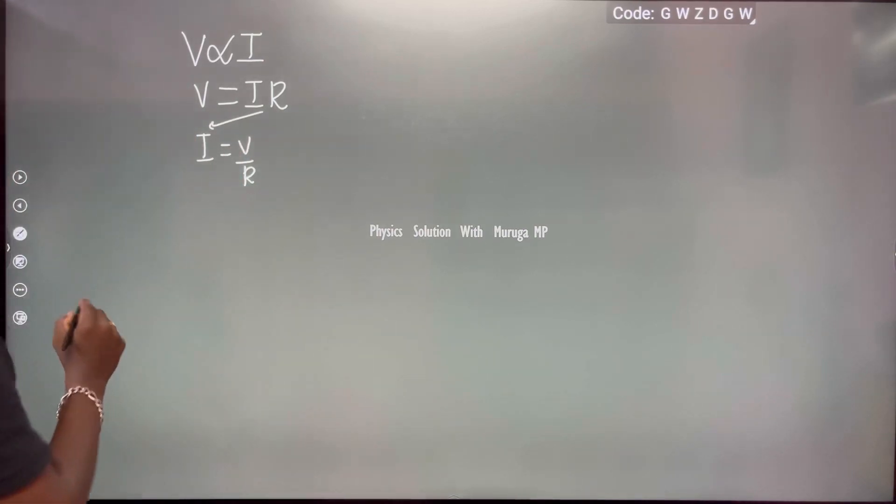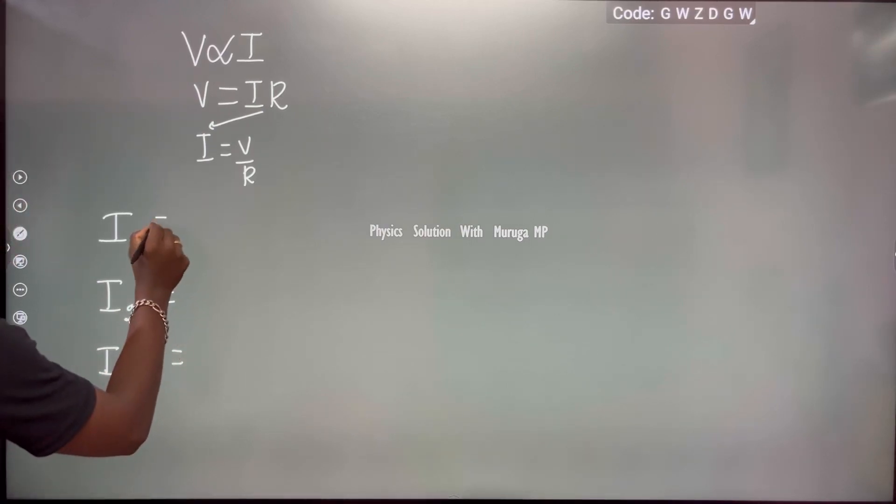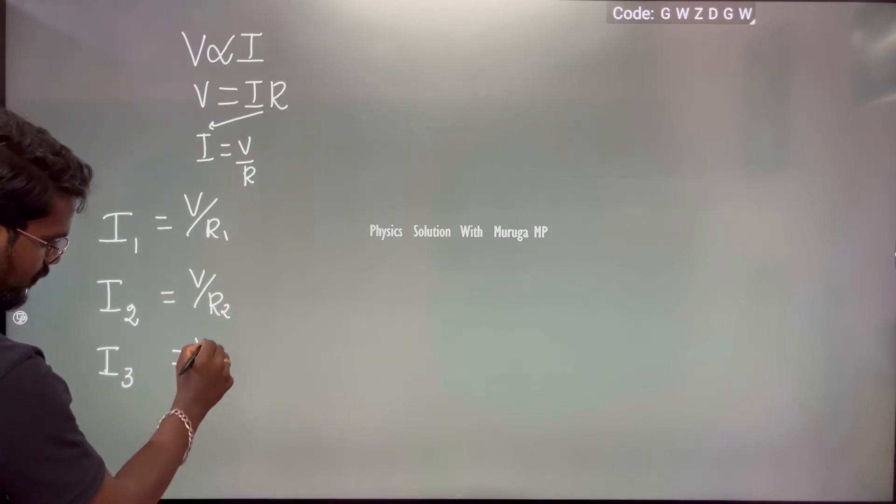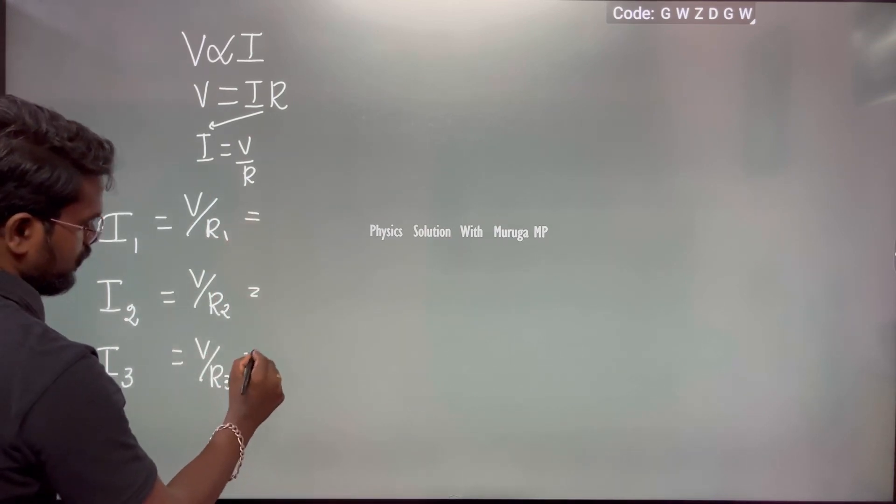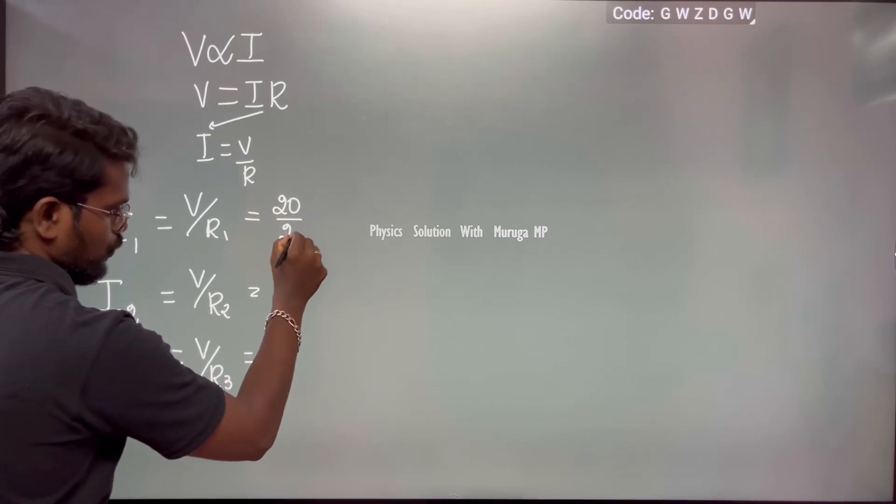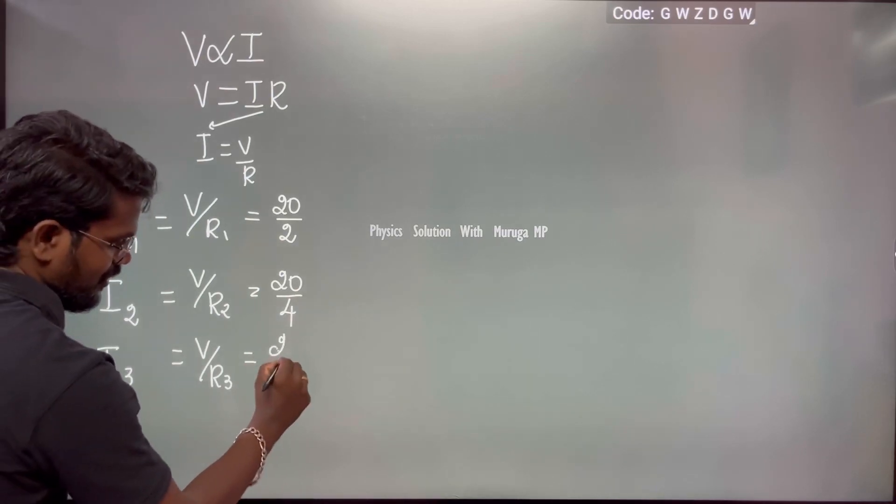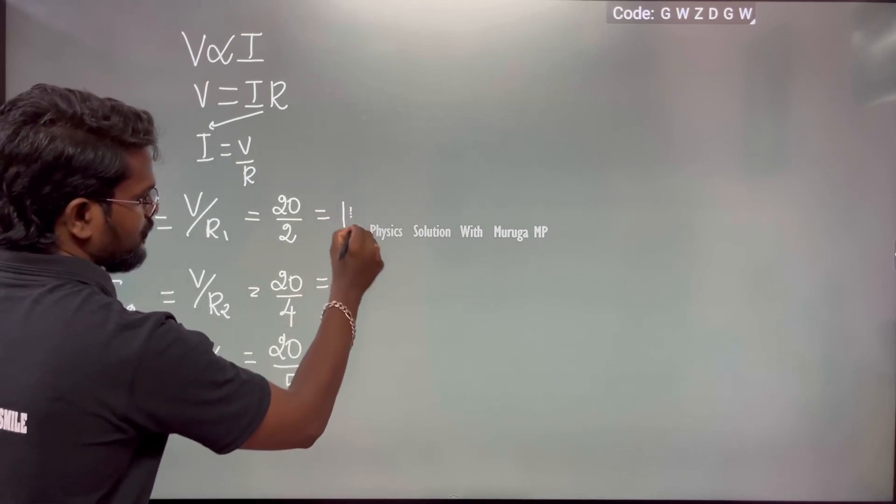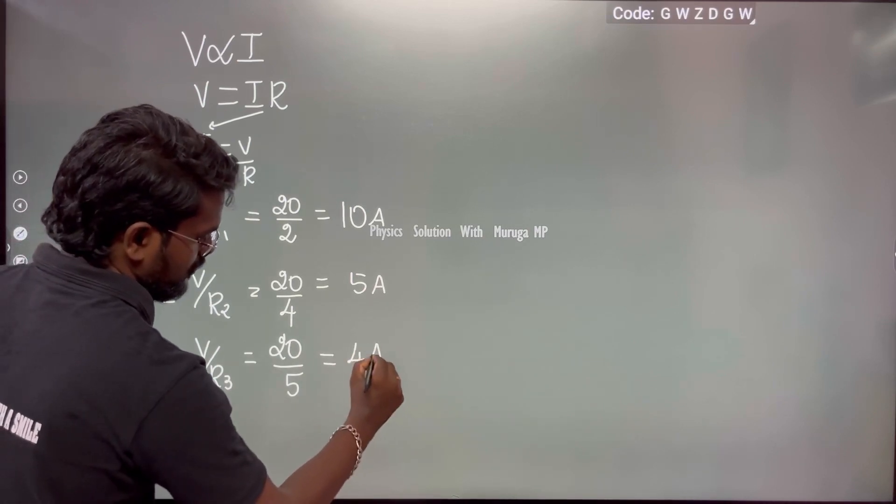I1 equals V/R1, I2 equals V/R2, I3 equals V/R3. The voltage is 20 volts. 20 divided by 2 for the first resistor, 20 divided by 4 for the second resistor, 20 divided by 5 for the third resistor. This value is 10 ampere, this is 5 ampere, this is 4 ampere.